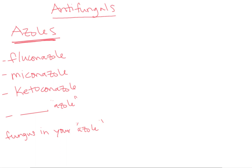An easier memory trick for that is that you have fungus in your azole. Probably in reality you have fungus in your vagina or in your GI tract, your mouth, throat, esophagus, stomach — but it's much more memorable to imagine you have fungus in your azole, so you can remember azole is an antifungal.